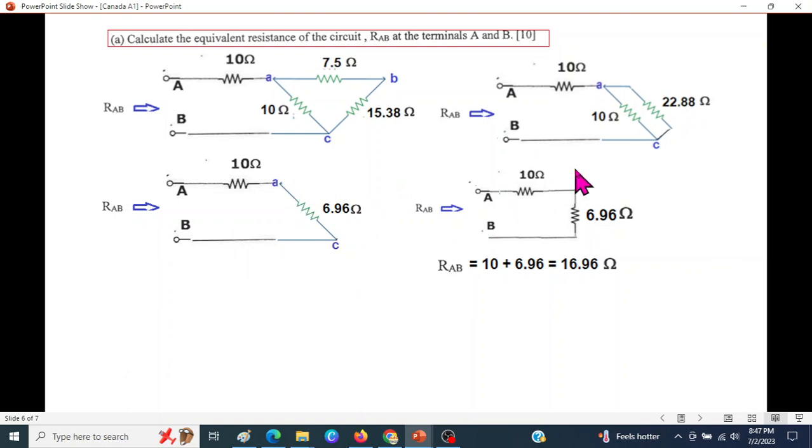Redrawing it neatly, this is our circuit. Adding them, we get the equivalent value. Our RAB is 10 plus 6.96, 16.96 ohm. I didn't add these just because in the next question, we have to use to find voltage here.